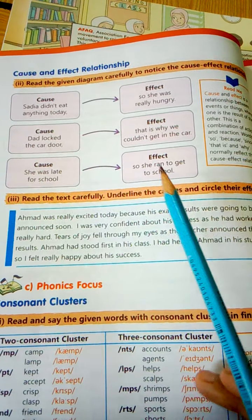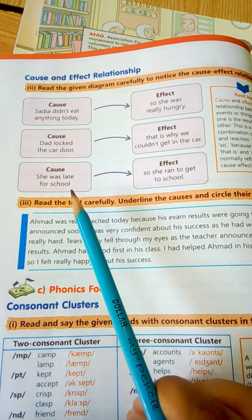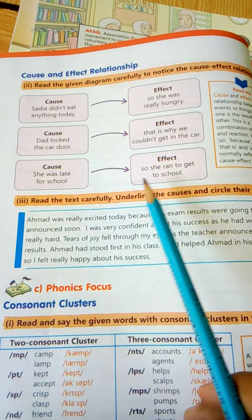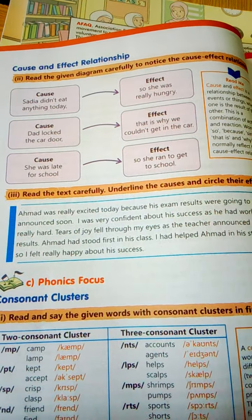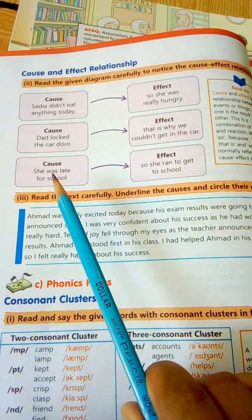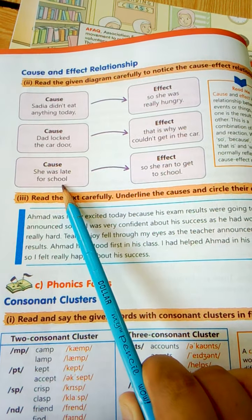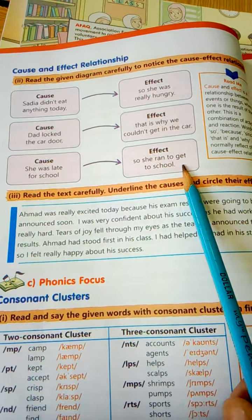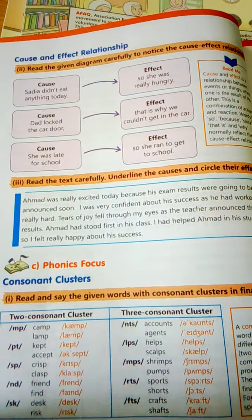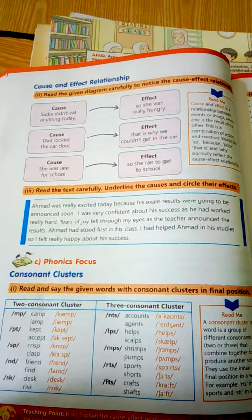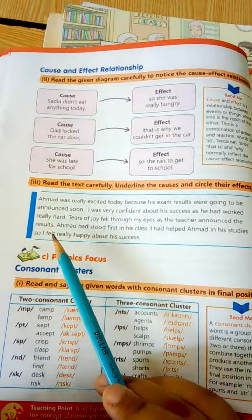Cause: She was late for school, so she ran to get to school. کیونکہ وہ لیٹ تھی اس لیے اس کو بھاگنا پڑا — school میں جلدی پہنچنے کے لیے۔ وجہ کیا تھی: لیٹ ہونا، اور effect کیا ہوا: اس کو بھاگ کے جانا پڑا۔